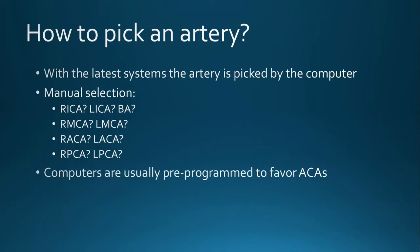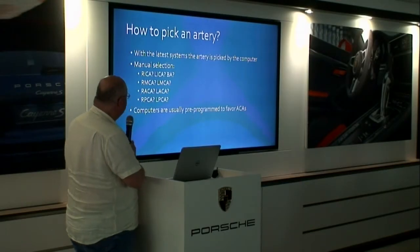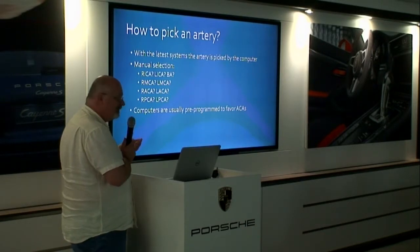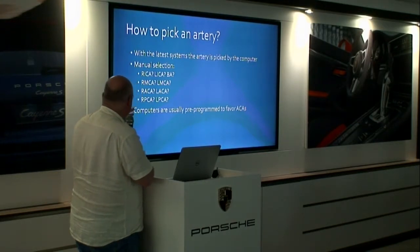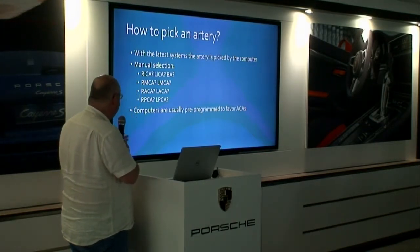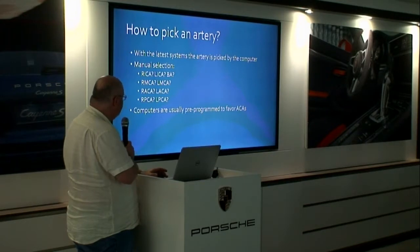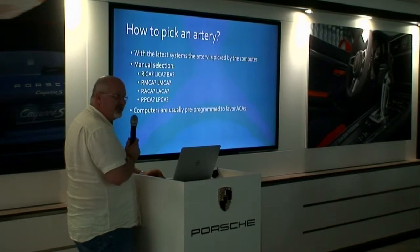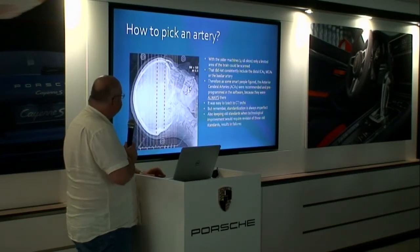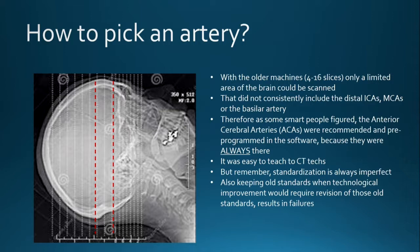There are a lot of tricks I learned while working on CT perfusion scans. This can be done automatically or manually. In the latest systems the artery is picked by the computer, but it can also be picked manually. Options are the internal carotid, the MCA, the ACA, or the PCA. Usually computers are pre-programmed to favor ACAs — and that blows my mind. I'll tell you why.